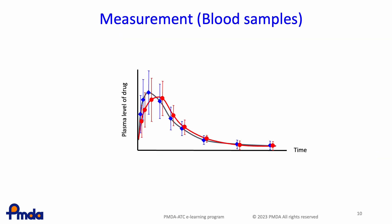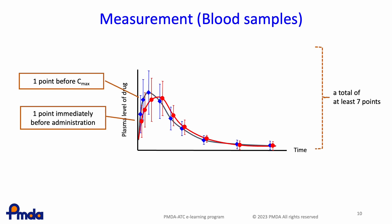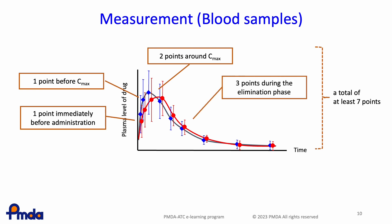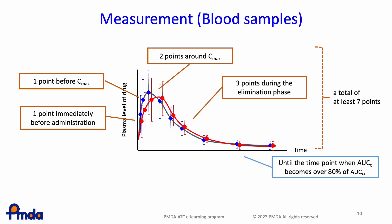Blood samples should generally be used for measurements. Blood samples should be taken at a frequency sufficient for assessing Cmax, AUC, and other parameters. There should be at least seven sampling points, including immediately before administration, one point before Cmax, two points around Cmax, and three points during the elimination phase. Sampling should be continued until AUCT is over 80% of AUC infinity, normally more than three times the elimination half-life after Tmax. However, when the elimination half-life is extremely long, samples should be collected until at least 72 hours have passed.